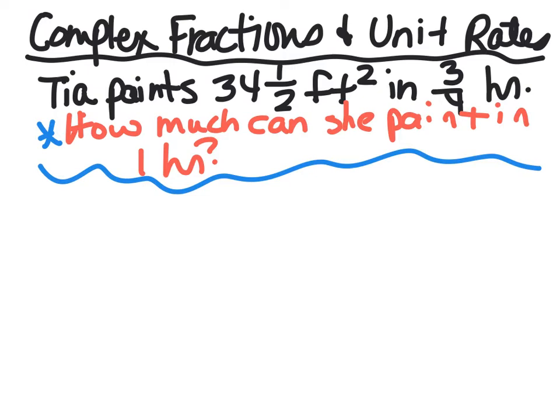So we're going to set it up as a complex fraction and a unit rate. Unit rates, meaning we need a fraction with labels. So it is 34 1/2 feet squared, square feet, divided by 3/4 of an hour.